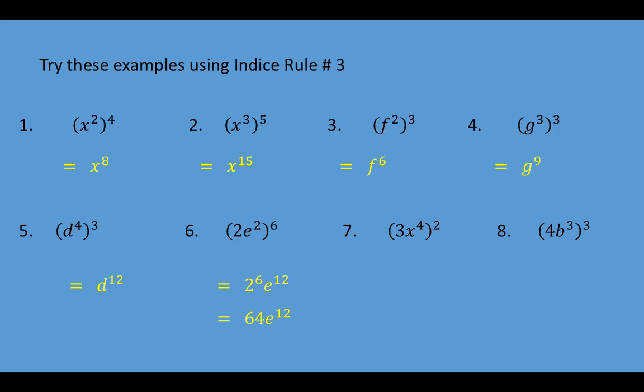Same thing happens in question 7. We've got 3x to the 4 all squared, so we're going to have 3 squared, and 4 times 2 gives us 8, so we have x to the power of 8. And to finish this one off, we have to work out what 3 squared is. 3 times 3 is 9, so the final answer is 9x to the 8.